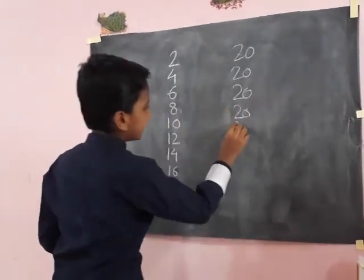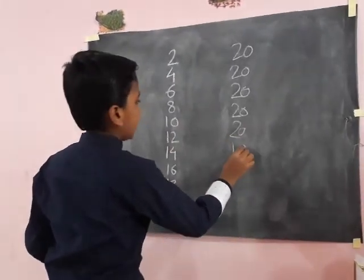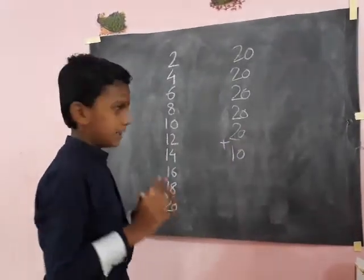Then write the same 20 right here. Then 10 right here as it is. And make a sum of all these numbers.